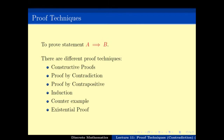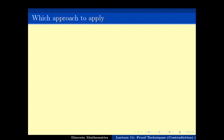To recap: to prove a statement like A implies B, there are various different proof techniques. We have already seen proof techniques namely constructive proofs, proof by contradiction, and so on. We will be seeing more other proof techniques in the next one or two weeks. Which proof technique to apply depends on the problem.